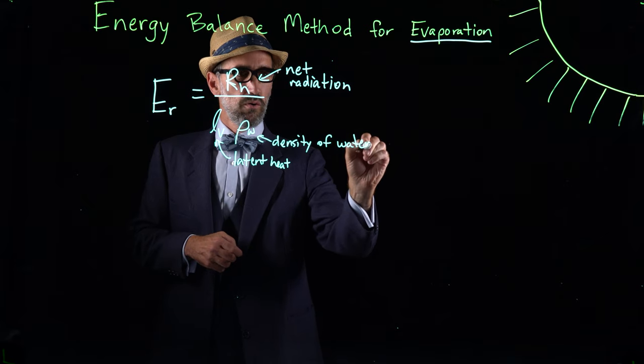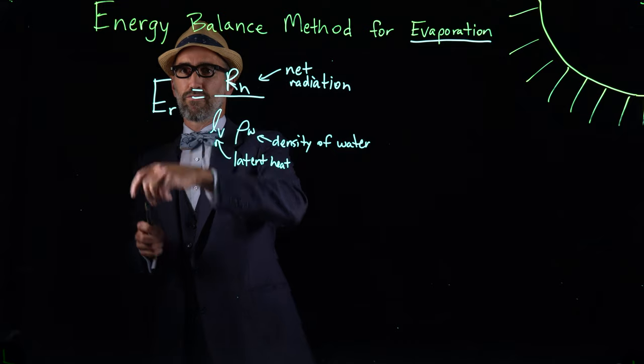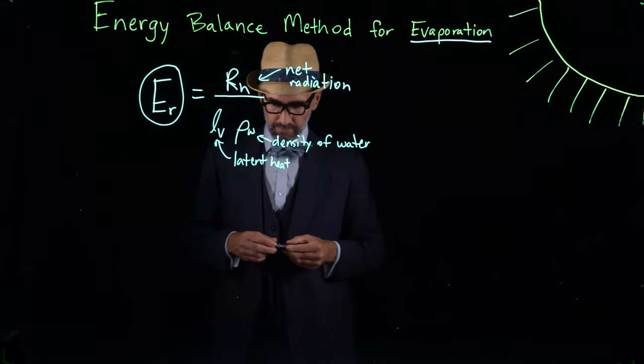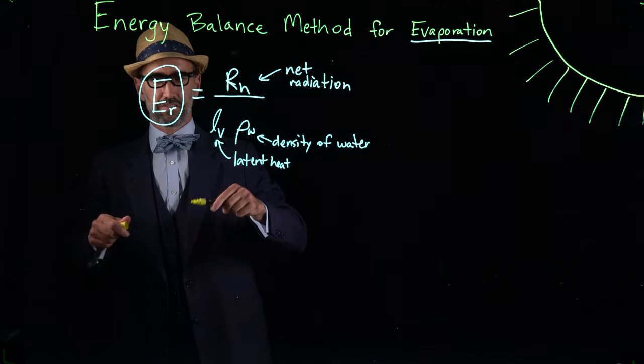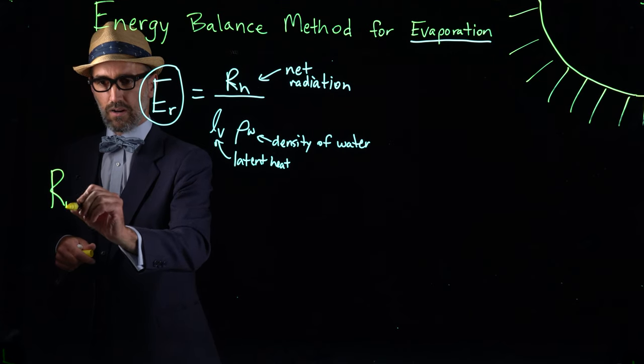So given what we know about Phoenix, we're going to solve this equation for our rate of evaporation. The first step, as I just mentioned, is to calculate the net radiation. So this is our R sub N.